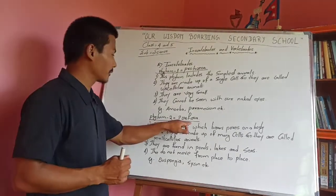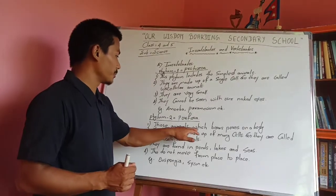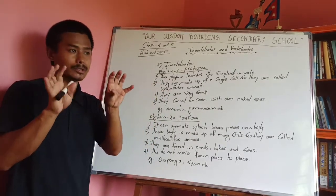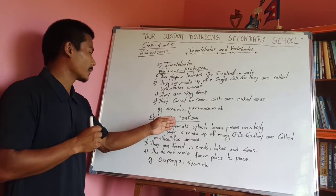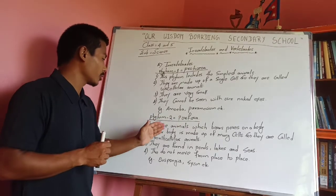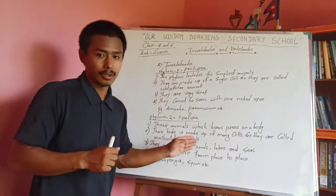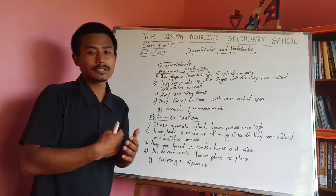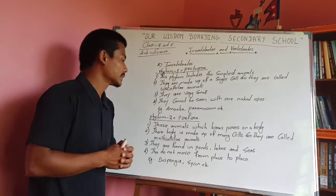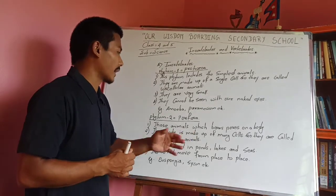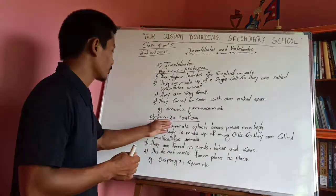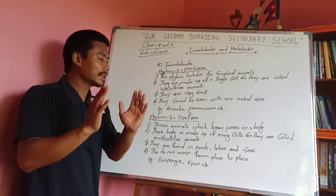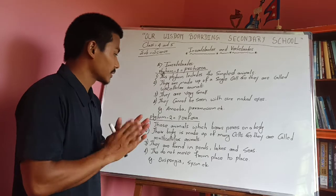The other phylum is Porifera. These animals have pores on their body. Those animals that live in the body are called polypores. These are multicellular animals. They are found in ponds and sea.